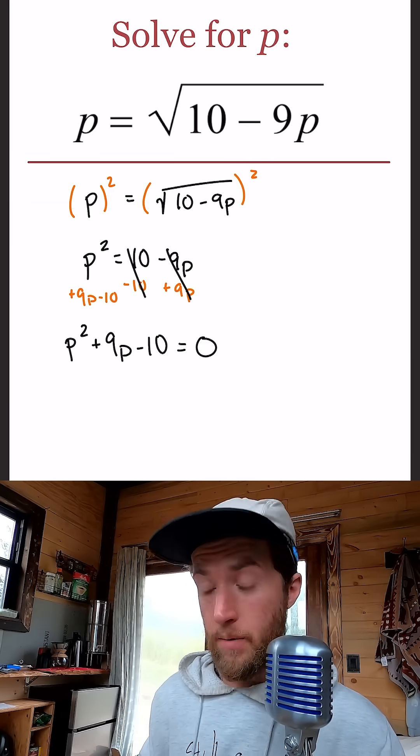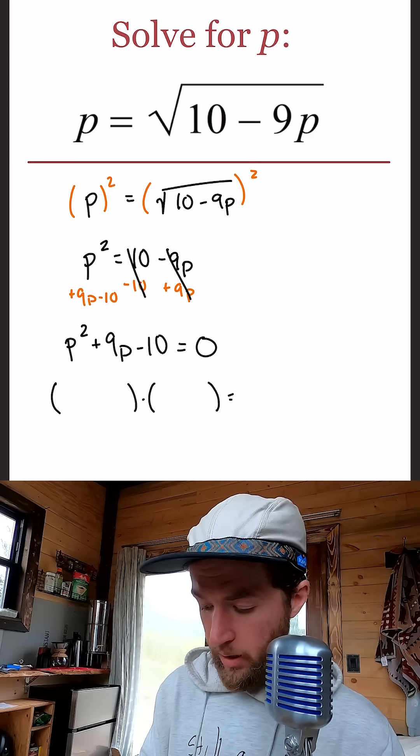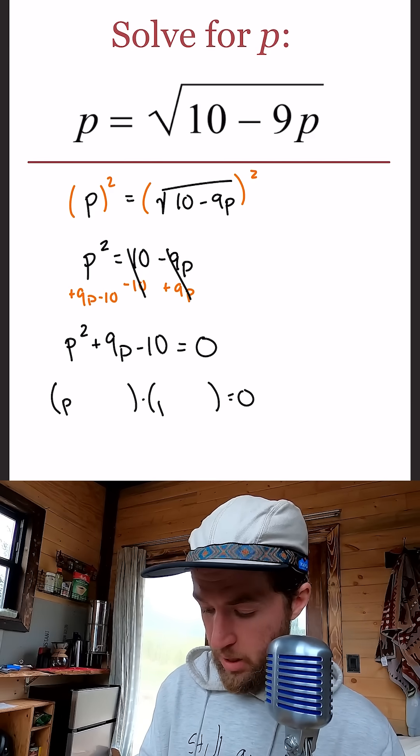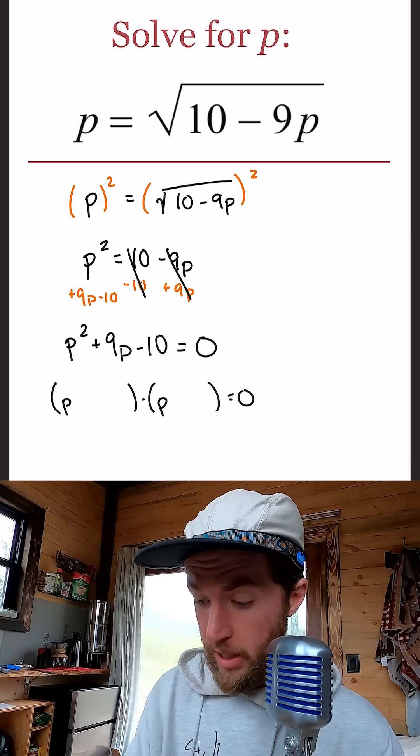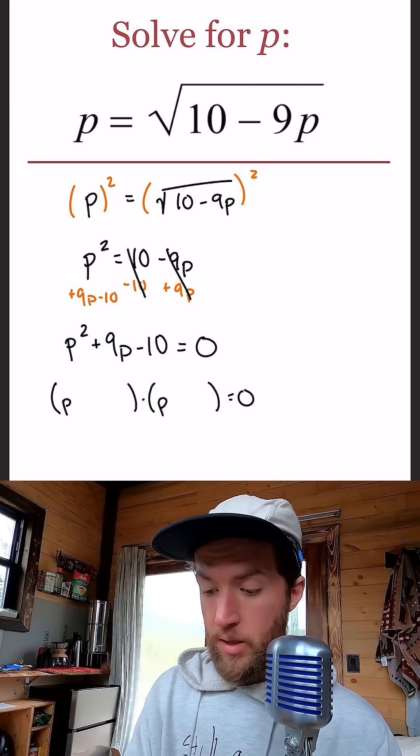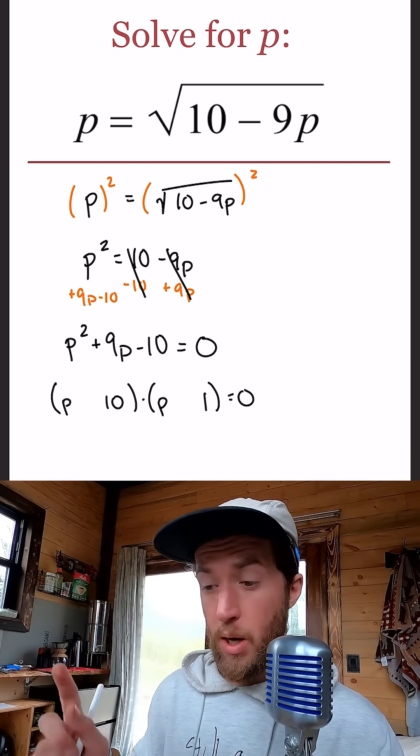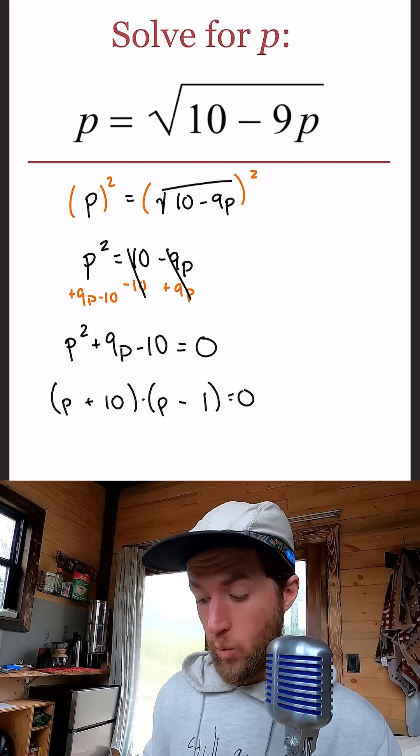Like I said, we have two different powers of P, but that's okay because we can factor this quadratic. This is why you learned factoring back in the day. P here and a P here. All right, two numbers that multiply to give us negative 10 and then add to give us positive 9. So it's going to be a 10 and a 1. And the question is, okay, it's positive 9, so we'll have positive 10 minus 1.